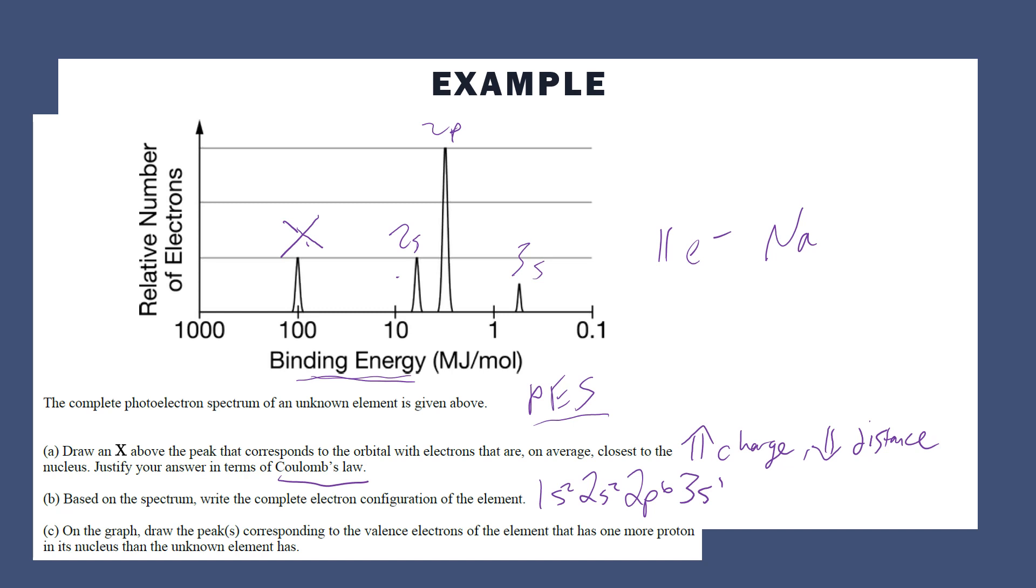For part C, draw a peak corresponding to the valence electrons of an element that has one more proton than the unknown element. So if this unknown element is sodium with 11 electrons, if it has one more proton it must be magnesium with 12 protons. It still has the same valence orbital, still in that 3s, but it will have two electrons in its 3s. And the additional protons increase the charge due to Coulomb's Law, so it will have a slightly higher binding energy than sodium's valence electrons.